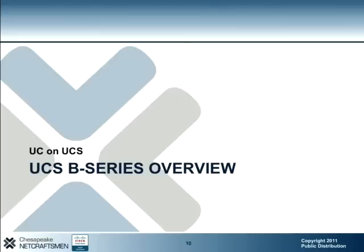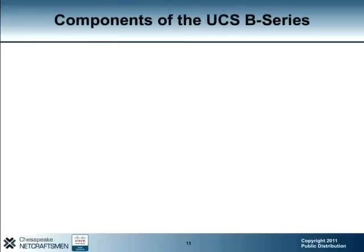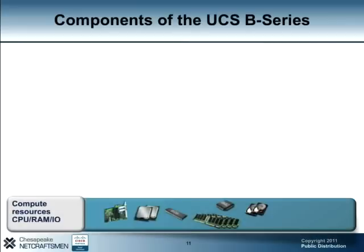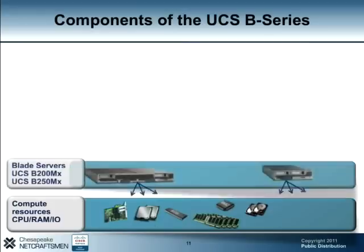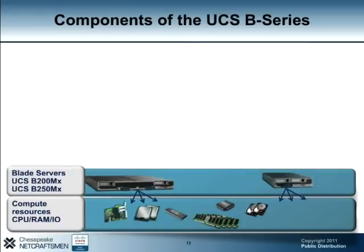Now we are going to spend the rest of this presentation focusing on the UCS platform, starting with the UCS B-Series chassis. If we break the UCS B-Series chassis into its smaller components, we would find that everything starts with the compute resources. The compute resources are components such as RAM, network, video, and storage devices that are physically installed on the blade server.